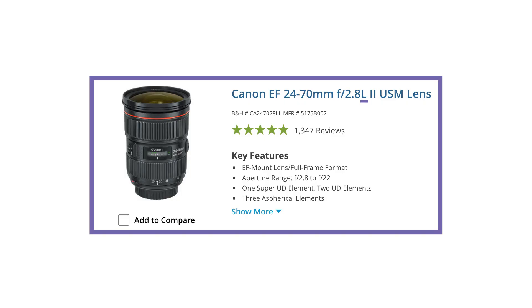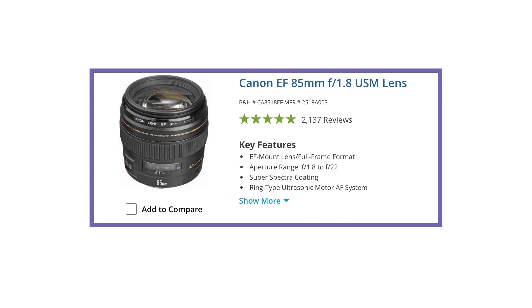You may see an L behind the aperture information. This just means that Canon considers this lens to be part of their professional line. If you don't see the L, it just means Canon considers that lens part of its standard line. Professional grade lenses generally have a better build, use better materials and better glass, so that you can get a better, more professional final product.